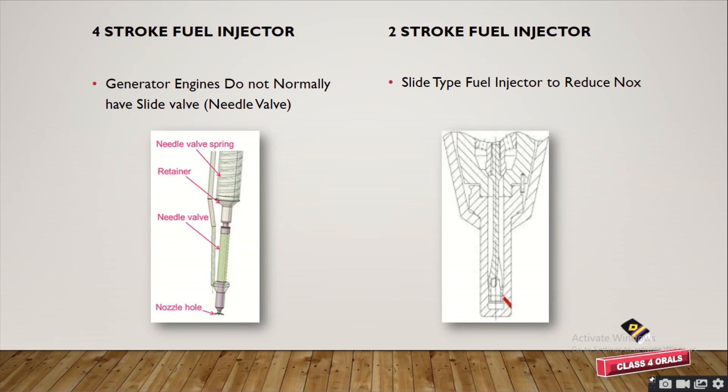In the 4-stroke type fuel injector there is the presence of a needle valve in the generator engines, and they do not normally have a slide valve, as you can see in the picture on the left. Whereas in the 2-stroke fuel injector, in order to reduce NOx formation, there is the presence of a slide type fuel injector. You can see the slide in the picture on the right side.